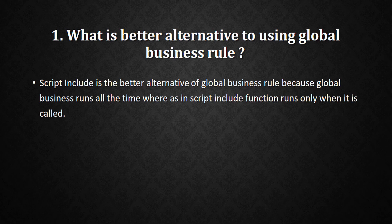You can say Script Include is the better alternative to using a global business rule, because global business rules run all the time, whereas in Script Include, the function runs only when it is called. Business rules run whenever a record is created, updated, or deleted. But in Script Include, the code executes only when called from another location, such as a UI action or business rule.